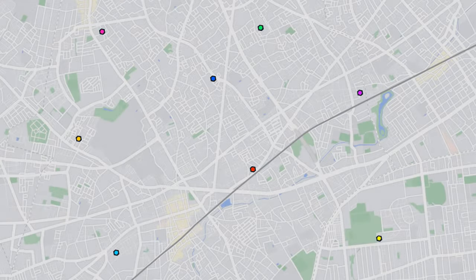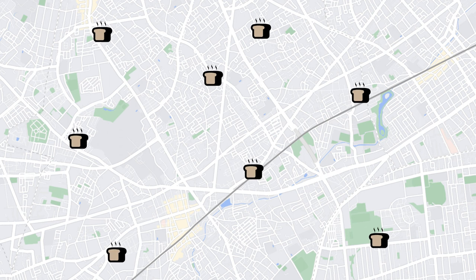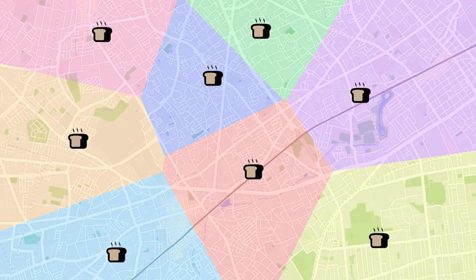The reason why someone like a business would want to use a diagram like this is so that they could compare the area that they serve with other businesses. If we say that each of these points is bakeries, the diagram would show us where customers are most inclined to buy their bread, assuming distance is the main factor.